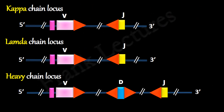Let's look at the locations of these RSS in the immunoglobulin loci. In the kappa chain locus, the RSS with a 23 base pair spacer is present adjacent to the V gene segment at its 3' side, and the RSS with a 12 base pair spacer is present at the 5' side of the J gene segment. In the lambda chain locus, these locations are reversed: the RSS with a 12 base pair spacer is at the 3' side of the V gene segment, and the RSS with a 23 base pair spacer is at the 5' side of the J gene segment. In the heavy chain locus, the RSS with a 23 base pair spacer is present at the 3' side of the V gene segment and the 5' side of the J gene segment, while the RSS with a 12 base pair spacer is present on both sides of the D gene segment.